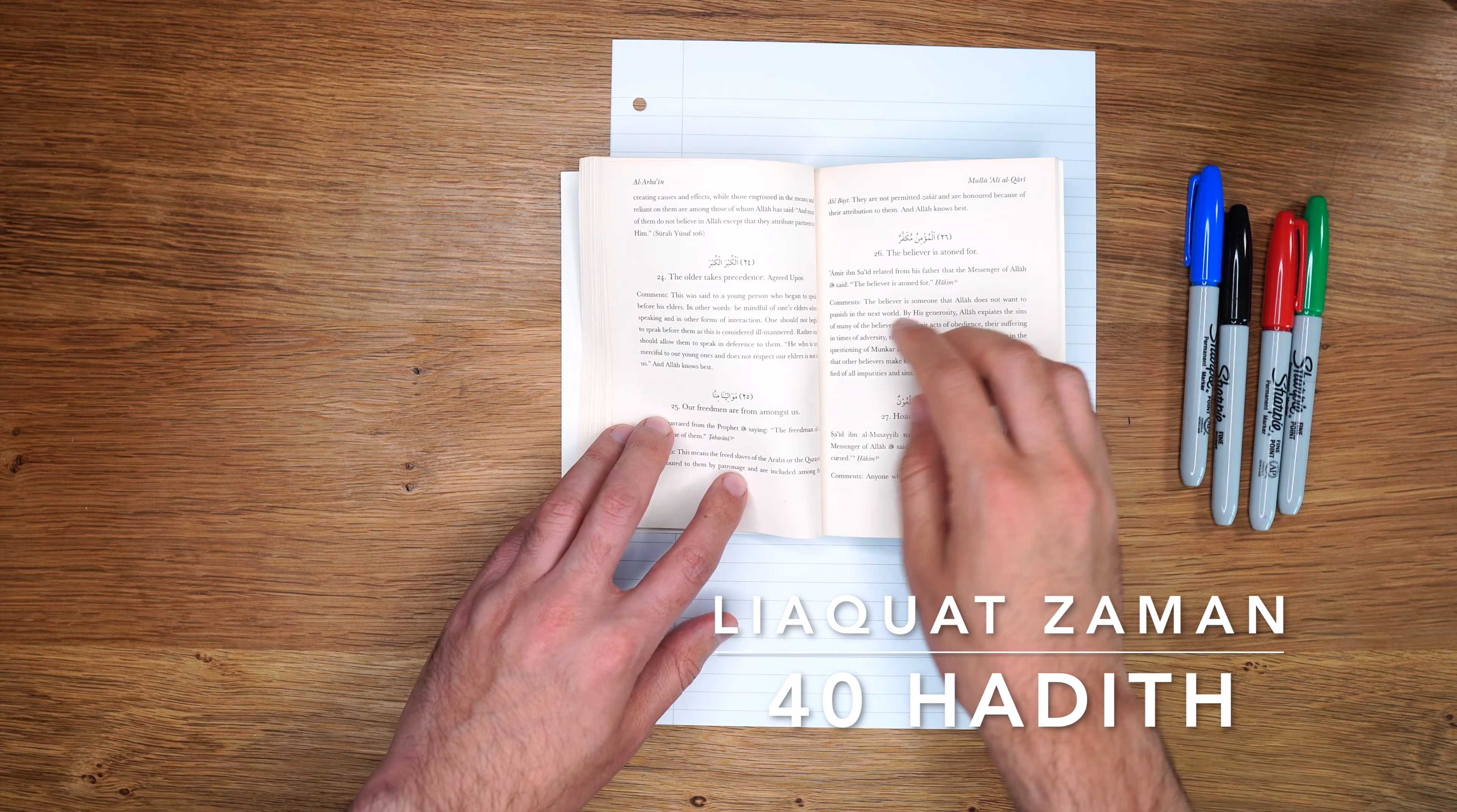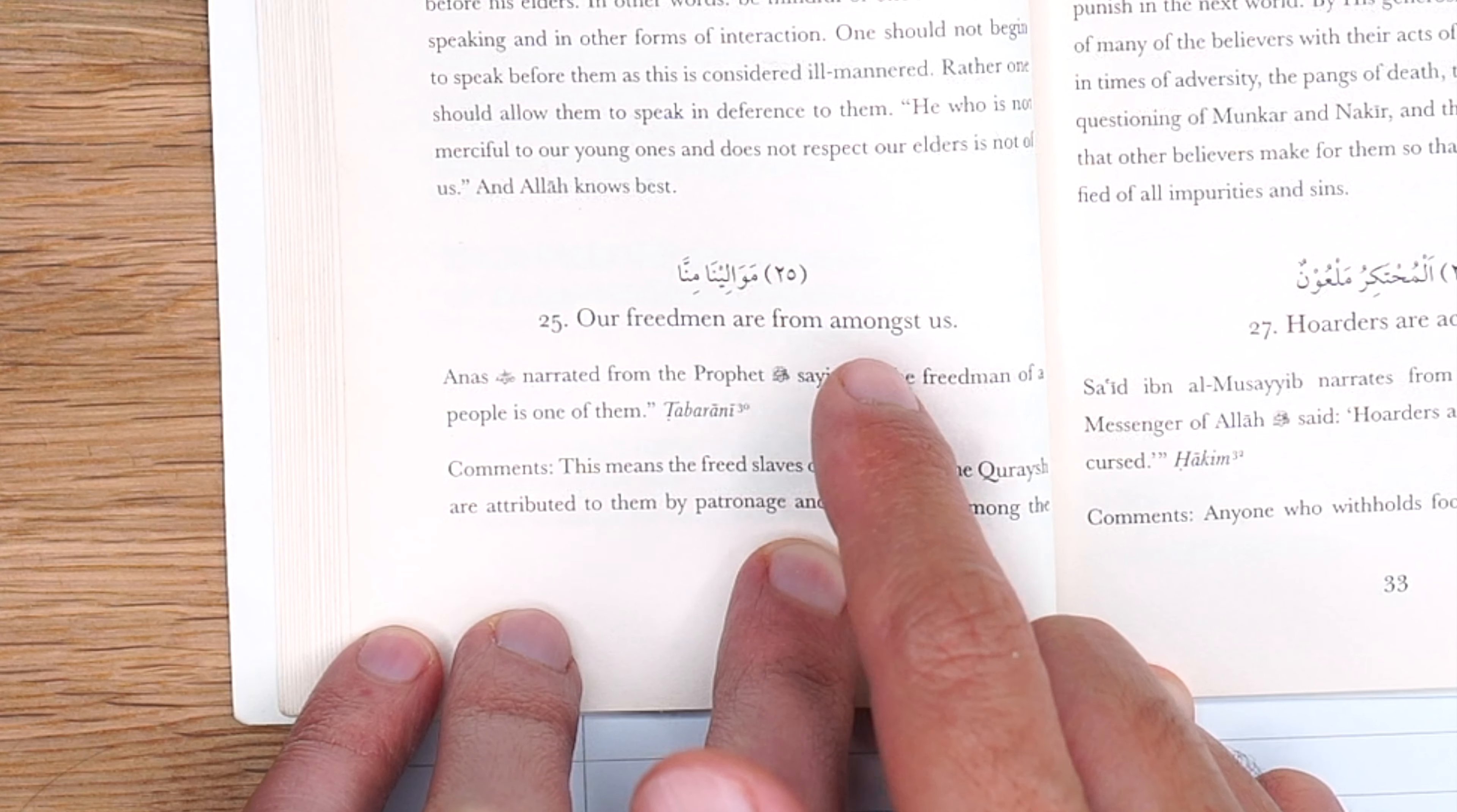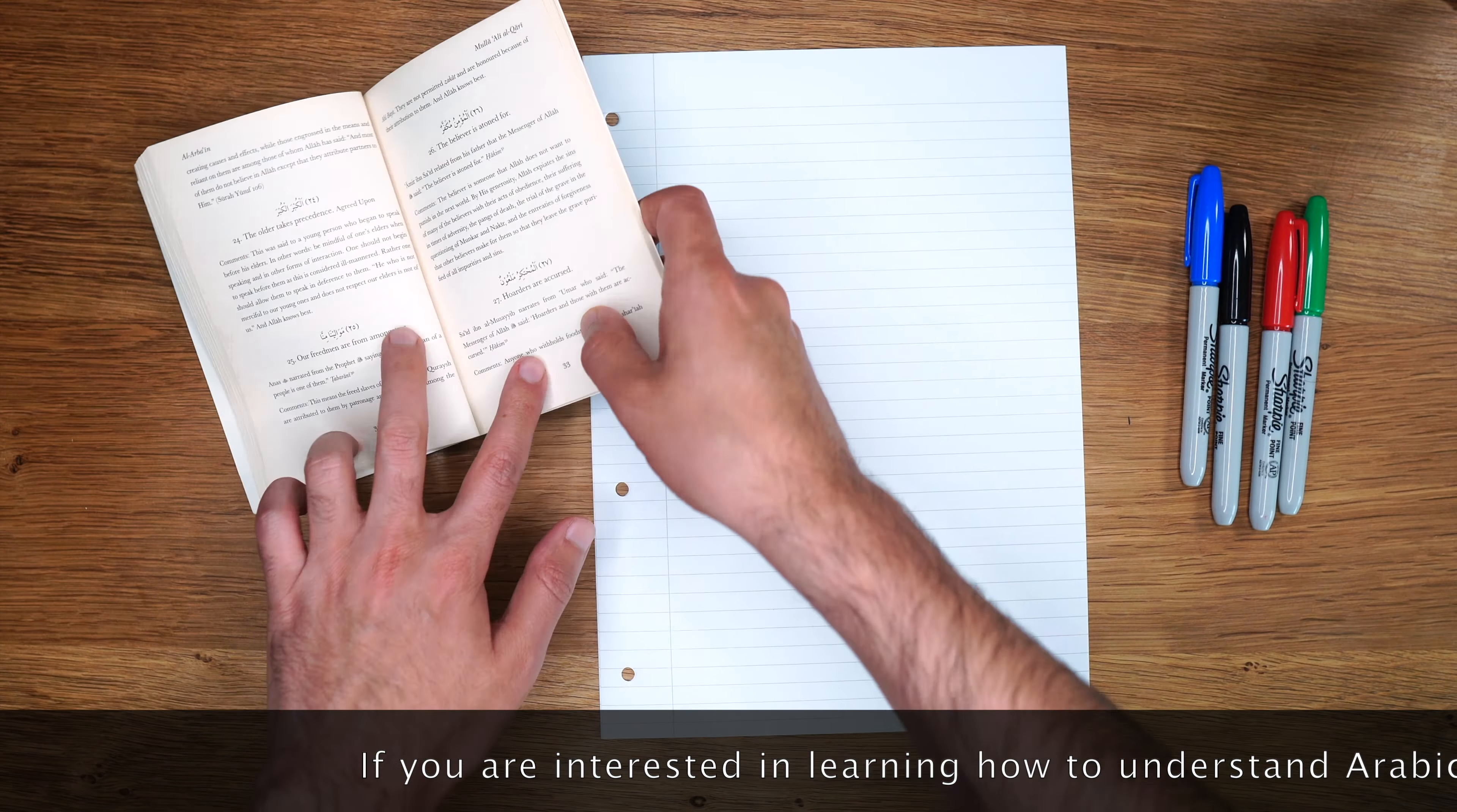Right, so we have reached this hadith over here. Bismillah ar-Rahman ar-Rahim, Allahumma salli wa salli wa barik ala Sayyidina Muhammad wa ala alihi wa sahbihi ajma'in. Mawaleena minna, our freedmen are from amongst us. Anas radiallahu anhu narrated from the Prophet sallallahu alayhi wa sallam saying, the freedman of a people is one of them. So this is a well-known hadith, Mawaleena minna, reached by Imam Tabrani.